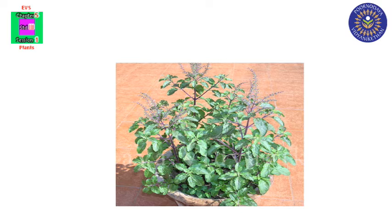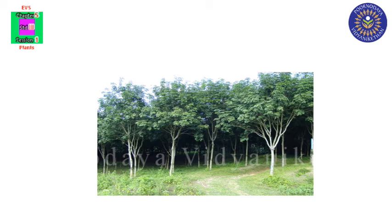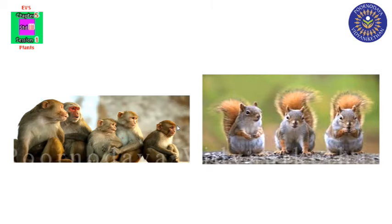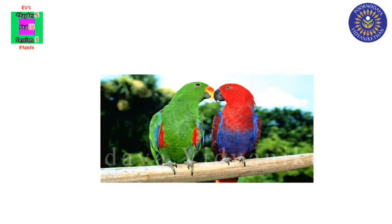Rubber is obtained from the bark of the rubber tree. Flowers of plants like rose and jasmine are used to make perfumes. Plants are also home to several animals like monkeys, squirrels, and birds.